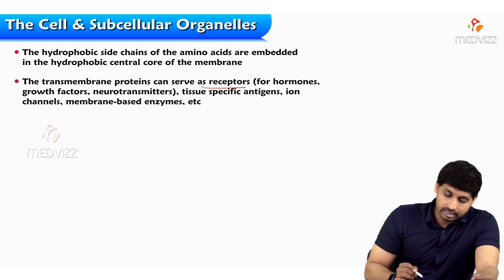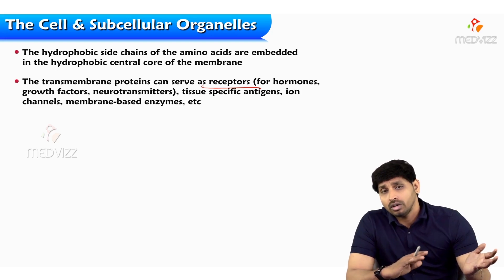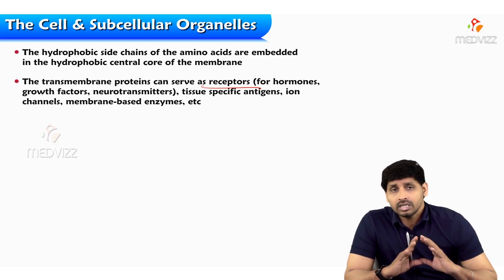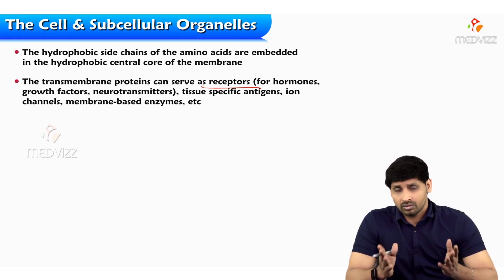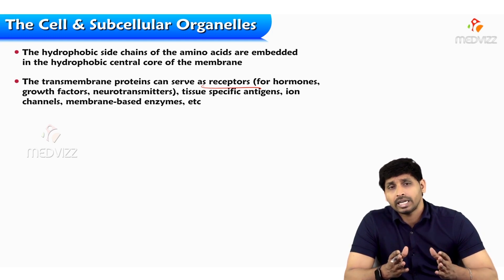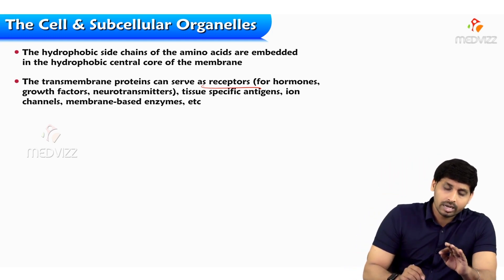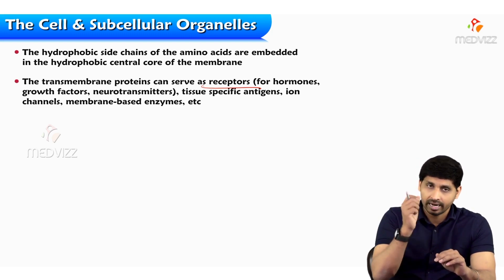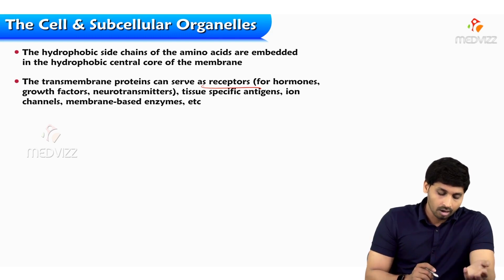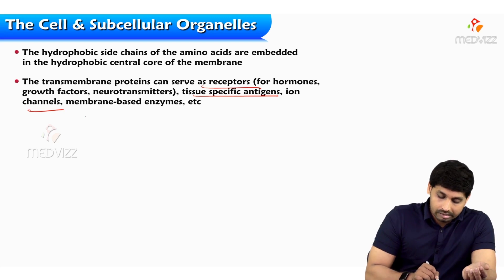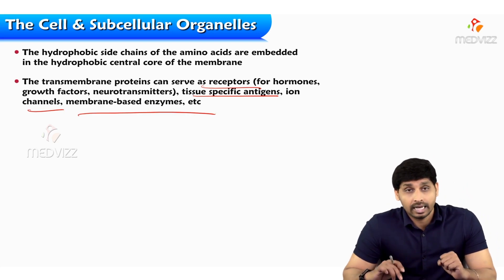The transmembrane proteins can serve as receptors — for example, for hormones. Hormones are not directly allowed inside; to transfer their information they require some transporters, and this function is taken over by the proteins, which is why they are known as receptors or information receptors. These proteins present in the membrane act as information receptors for hormones, growth factors, neurotransmitters, tissue-specific antigens, ion channels, and membrane-based enzymes.